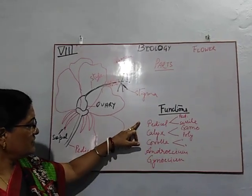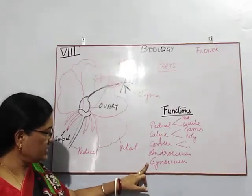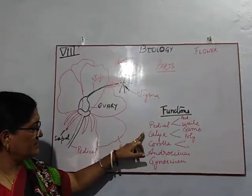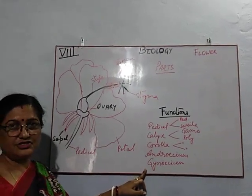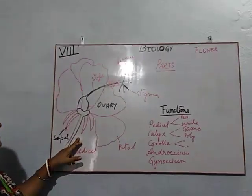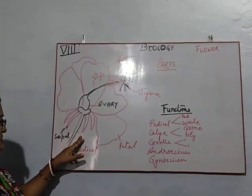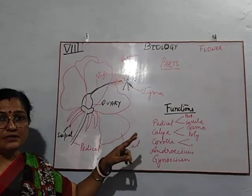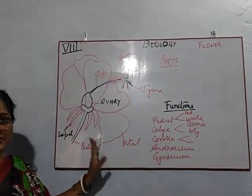Now children, you will complete in your textbook question-answer copy the functions of petals, calyx, corolla, androecium, and gynoecium. In the question-answer copy, you can write about the parts of the flower and which part helps the plant for which function. You can write about the functions also.